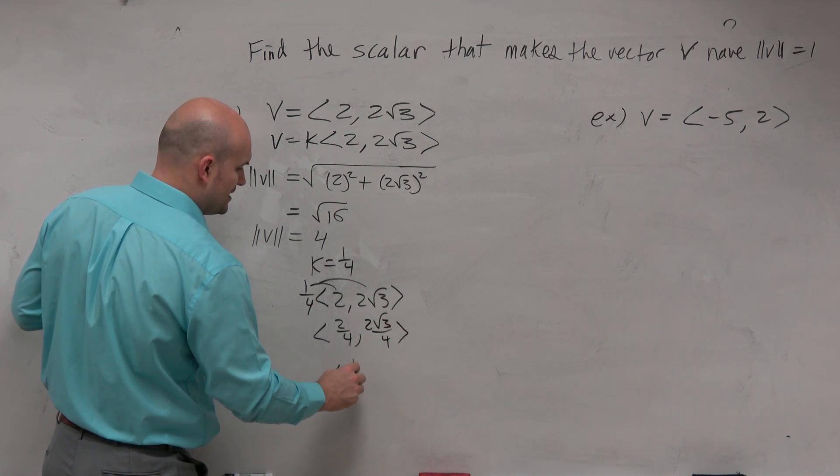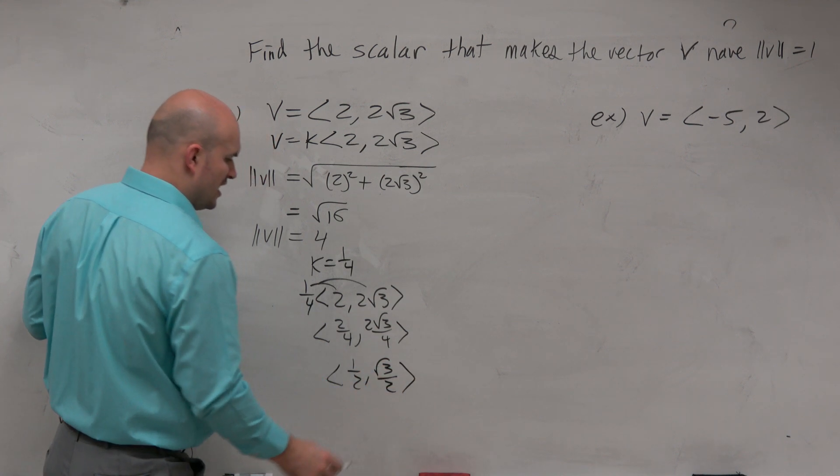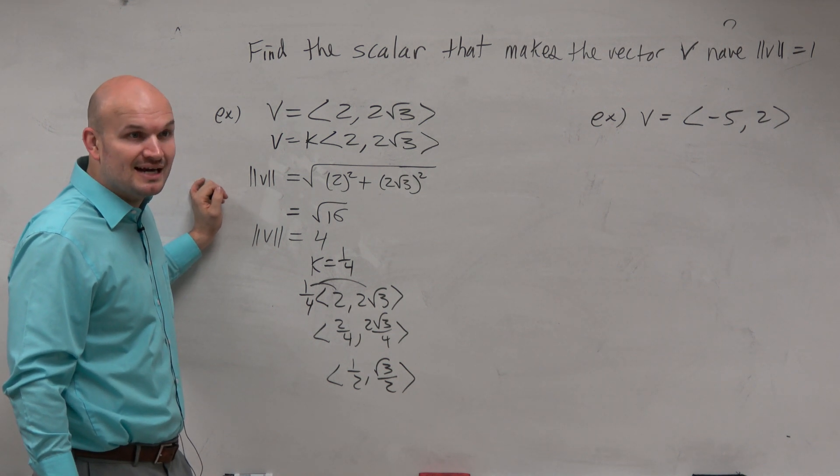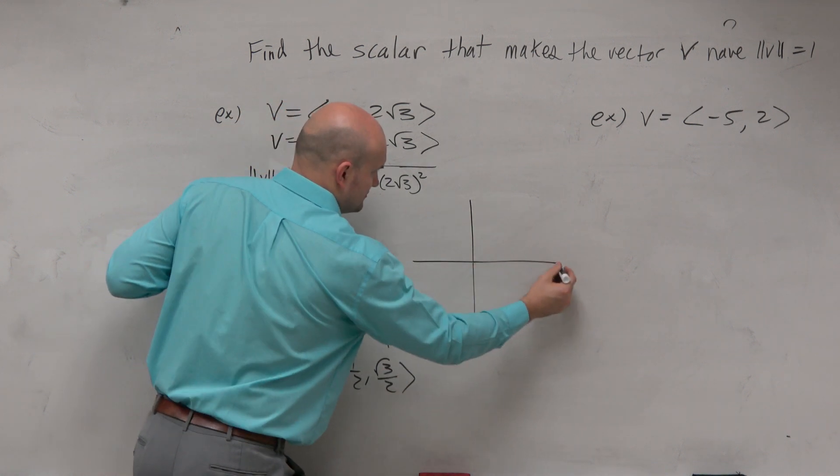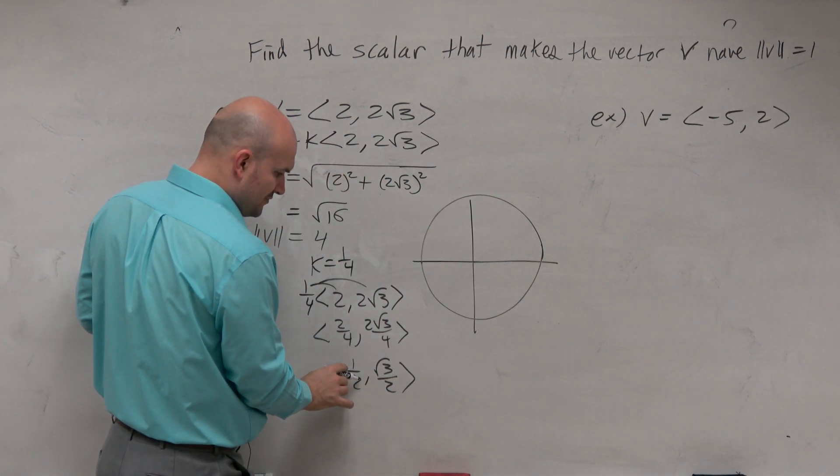I can simplify that a little bit: 1/2 comma square root of 3 over 2. Are we familiar with those coordinates? The unit circle? Yeah. Those are points that lie in a unit circle, right? So basically, this vector, 1/2 comma square root of 3 over 2,